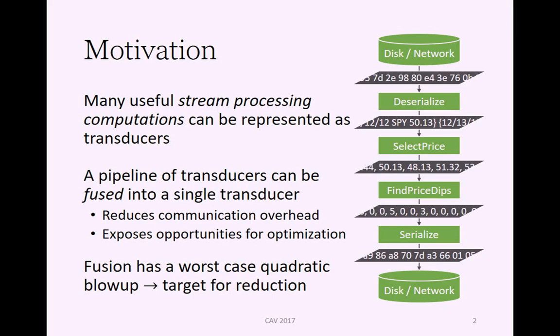The motivation is that many useful stream processing computations can be represented as transducers. If we have a pipeline of these transducers, then we can apply fusion to produce a single transducer for this pipeline. This reduces communication overhead and exposes opportunities for optimizations. However, fusion has a worst-case quadratic blow-up as a form of product construction, making it a target for reduction.